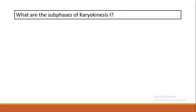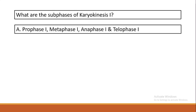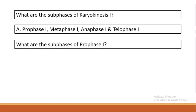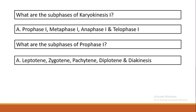Next: what are the sub-phases of karyokinesis one? We say PMAT — Prophase one, Metaphase one, Anaphase one, and Telophase one. What are the sub-phases of Prophase one? This is a tricky one. There are five sub-phases: Leptotene, Zygotene, Pachytene, Diplotene, and Diakinesis.